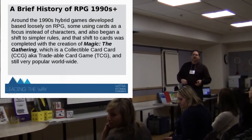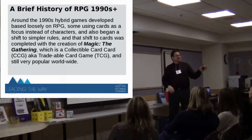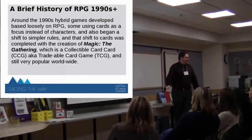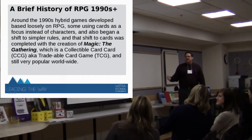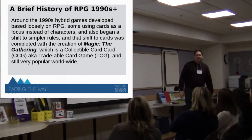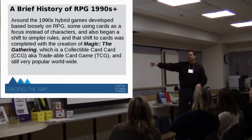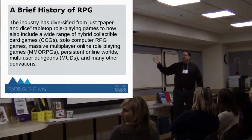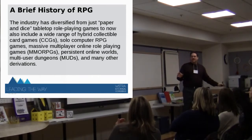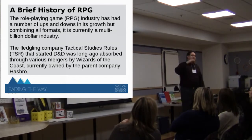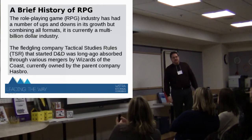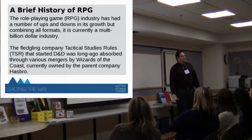Around the 90s, some hybrid games started to evolve from the tabletop version. LARP was just starting to get going, and there were some video games, though not great. Collectible card games emerged — Magic the Gathering, Pokemon, Yu-Gi-Oh — starting with Magic the Gathering, which was much more profitable for game companies because you have to keep buying them and new issues make old ones obsolete. They diversified into collectible card games, solo computer games, massive multiplayer online role-playing games, and persistent online worlds. TSR was absorbed by Wizards of the Coast, which was then absorbed by Hasbro.